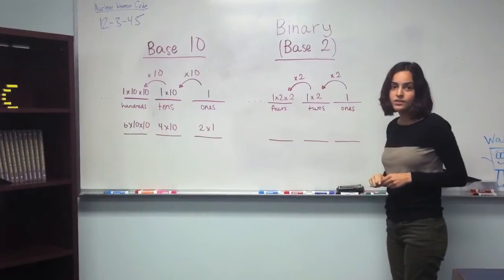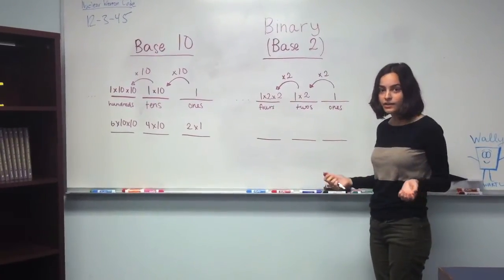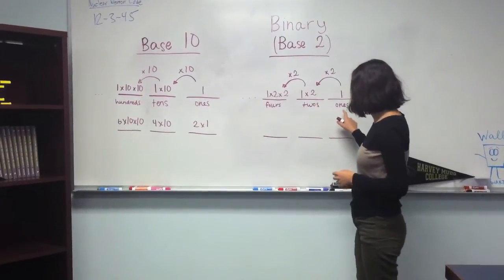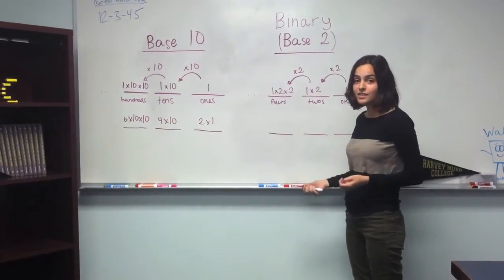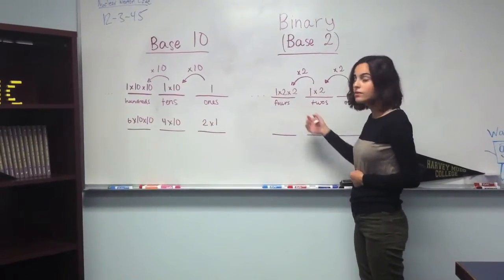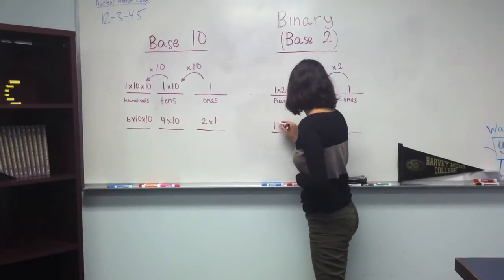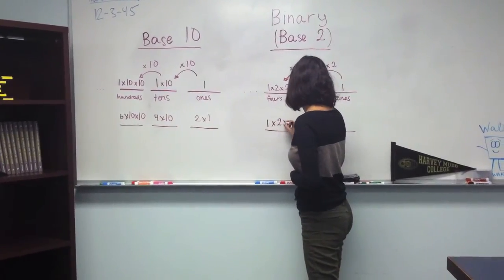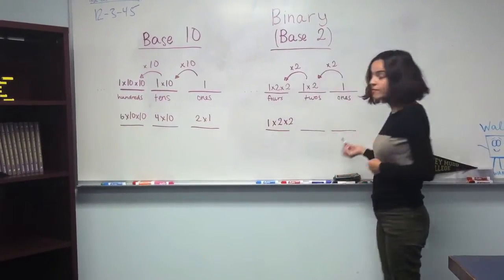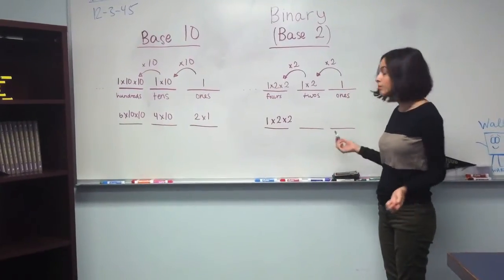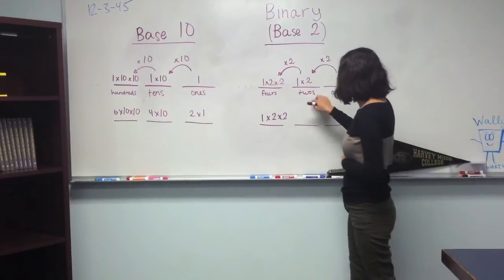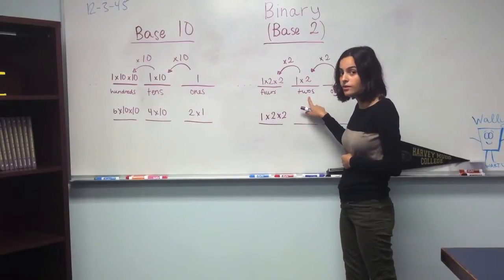So let's say we wanted to represent the number 5 in binary. Well, the largest placeholder out of the 1s, 2s, and 4s that is less than 5 is 4. So we can use one 4. Now, 5 minus 4 is 1, so we're left over with a 1.